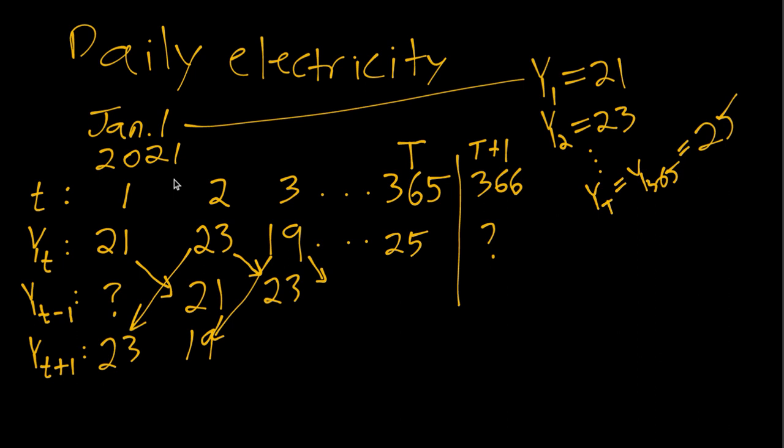And then finally the first difference of the time series usually written with this capital delta and then a y_t which means y_t minus the first lag. So y_t minus y_{t-1}.